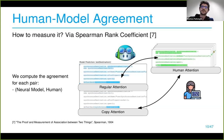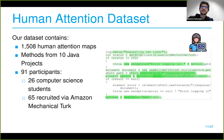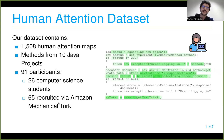This is a summary of our attention dataset: 1,500 human attention maps, working on Java projects, involving 91 participants — both students and Amazon Mechanical Turk workers. This is an example of an attention map from the human.